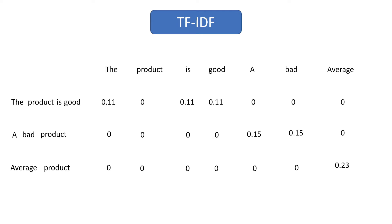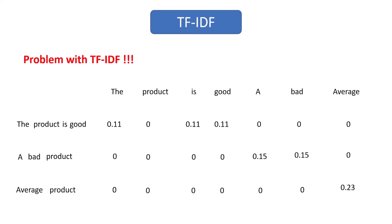This is how TF-IDF works. Now, the problem with TF-IDF is it does not preserve the meaning of each word — it simply gives weightage based on the frequency of each word. For example, the words 'is' and 'good' are getting equal weightage, but they are not equal in terms of meaning. If two words occur equally, it doesn't mean they are equally important. The weightage should be based on the meaning of each word, not frequency. That is where word embedding comes into the picture, which we'll discuss in the next video.